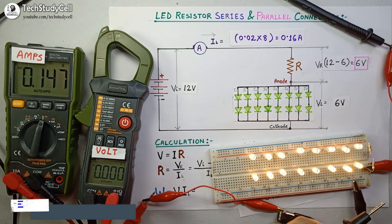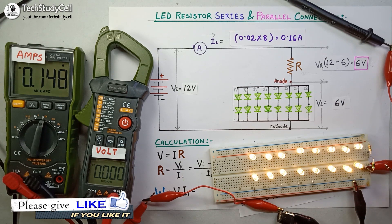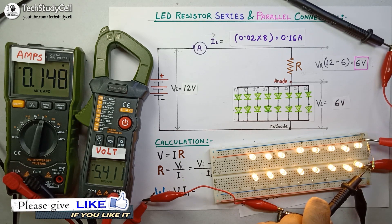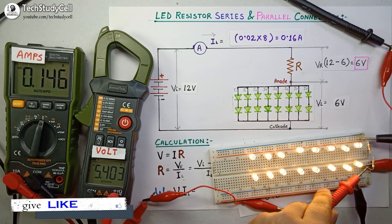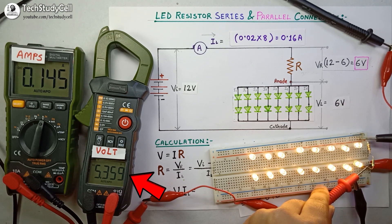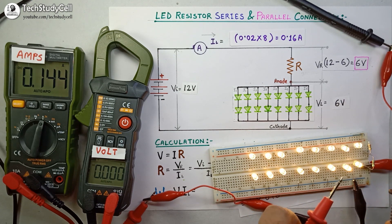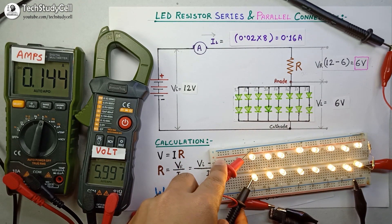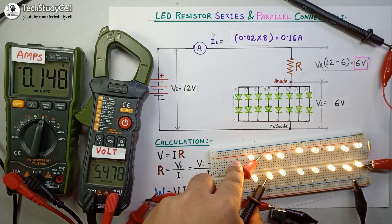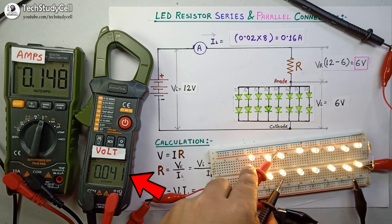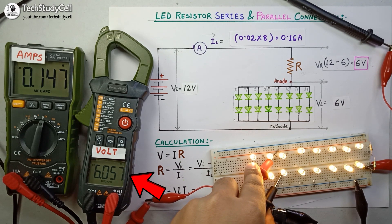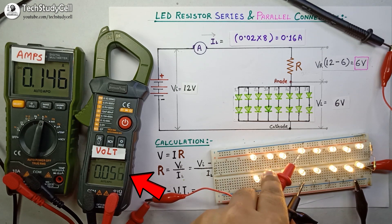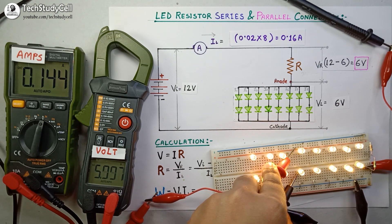Now we will measure the voltage drop across the resistance. I have used 2 resistors — 10 ohm and 27 ohm — to get a total of 37 ohms. The voltage reading across the resistor should be close to 6 volts, and the clamp meter is showing 5.4 volts, which is very close. Now we will measure the voltage across each LED string. Measuring each string, the clamp meter shows 6 volts — the voltage drop across each string is 6 volts, matching our calculated value.